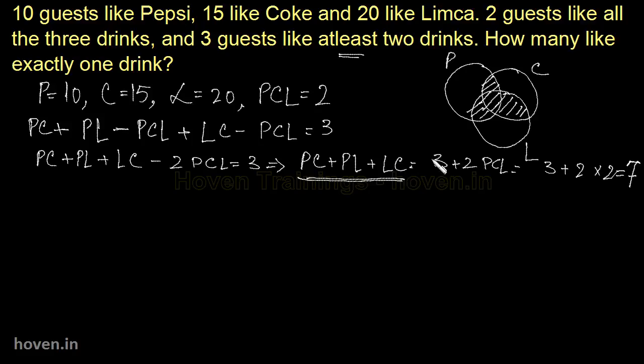So with this all given, now let us see what is he asking. He says how many like exactly one drink. So exactly one means those that fall under P underscore, C underscore and L underscore. So we write P underscore plus L underscore plus C underscore. This sum is required. Now it is very easy to see that both our Venn equations will be required here because we have PCL also and this also.